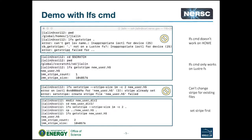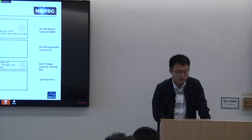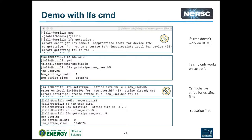Here's a quick demo of the striping command using LFS. This only works on the Scratch file system and doesn't work on any non-Lustre file system. For example, if you log on to Cori and type the command 'LFS getstripe' to find out how many OSTs are being used by your file, you will see an error because the home directory is not Lustre-based.